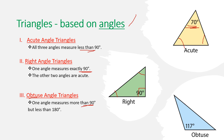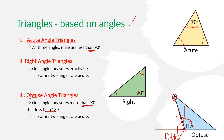An obtuse angle is one that measures more than 90 degrees but less than 180 degrees. If the angle were more than 180 degrees, the shape would not close — the sides would never meet and it would never form a triangle. So in an obtuse triangle, one angle is greater than 90 degrees, and the remaining angles must be acute.